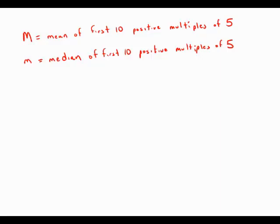If m is the average of the first 10 positive multiples of 5 and capital M is the median of the first 10 positive multiples of 5, what is the value of capital M minus lowercase m?